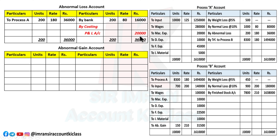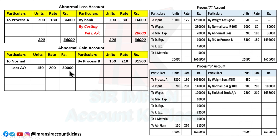In the next video, question number 8 will include the Costing P&L account. Now for abnormal gain: it occurred in Process B — 150 units at ₹210 = ₹31,500, recorded on the credit side. Since it's a gain, we write normal loss rate: 150 × 200 = ₹30,000 on the debit side. The difference of ₹1,500 goes to Costing P&L. Both differences — from abnormal loss and abnormal gain — are transferred to Costing P&L.